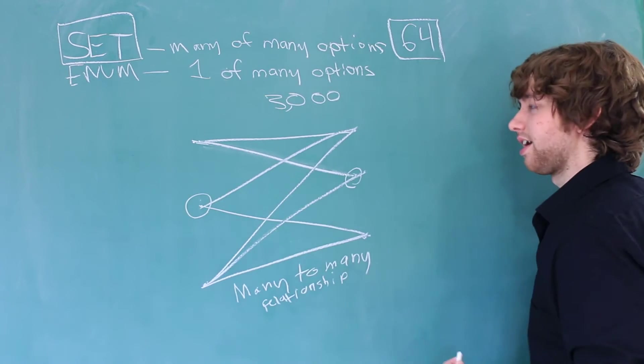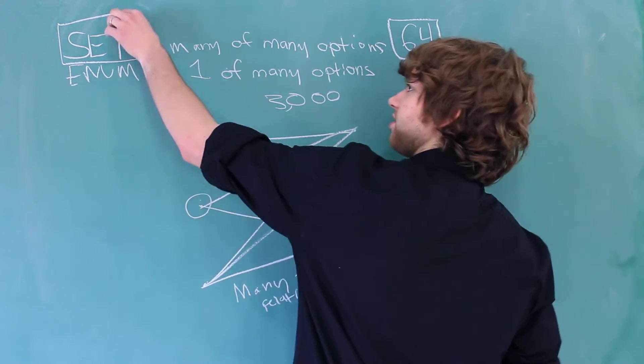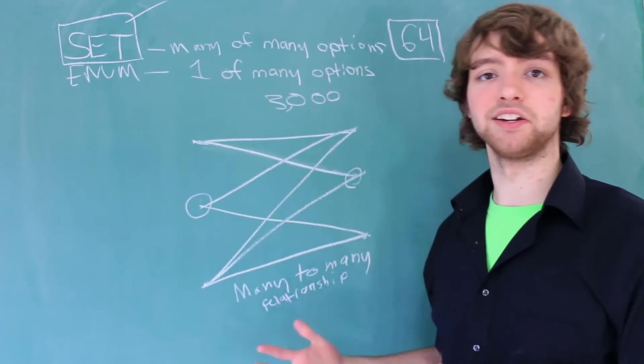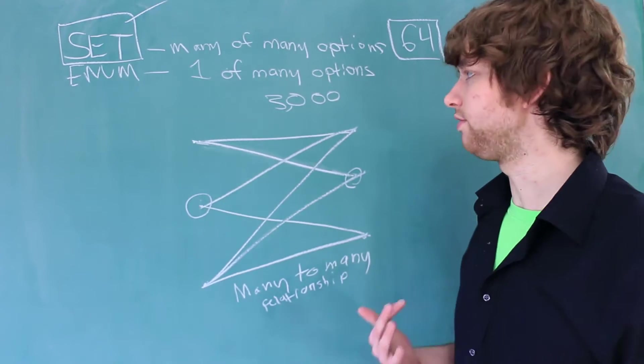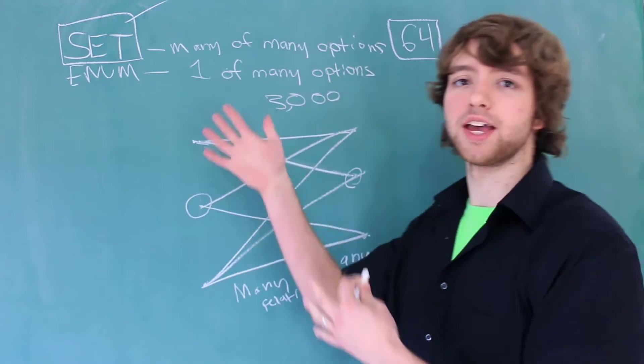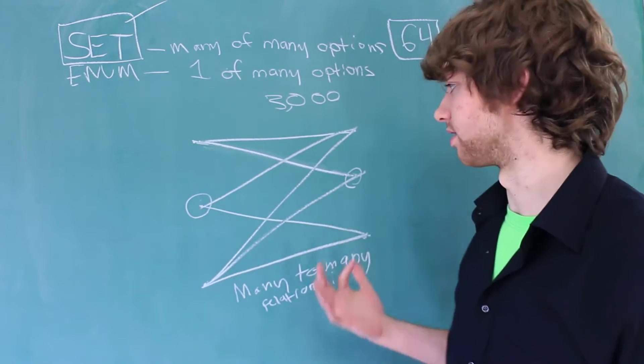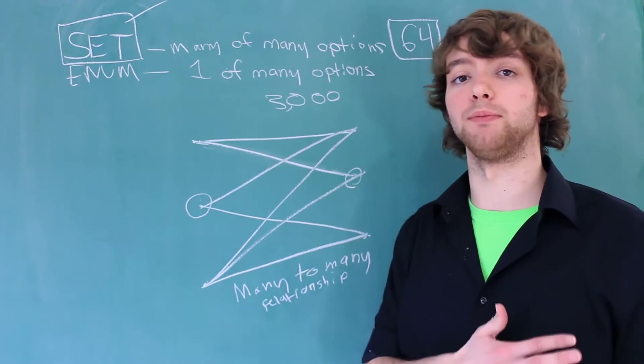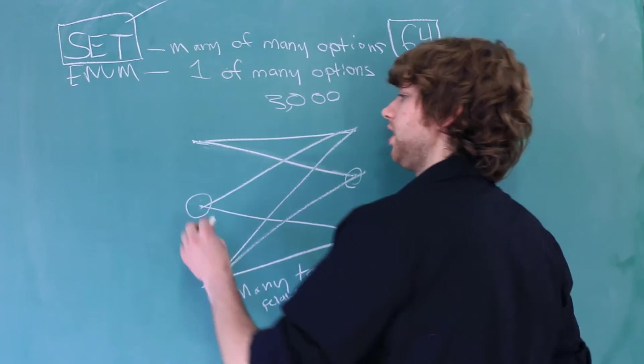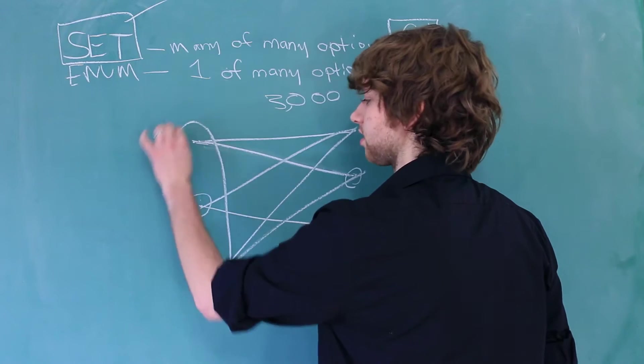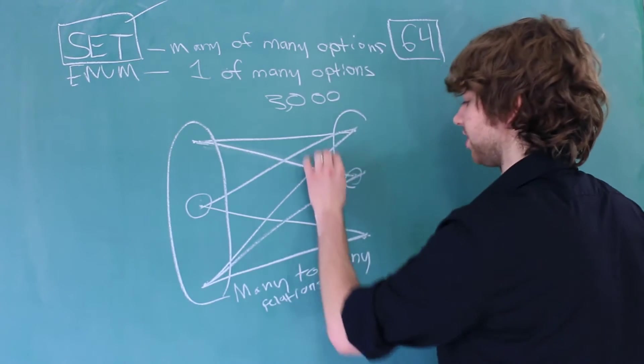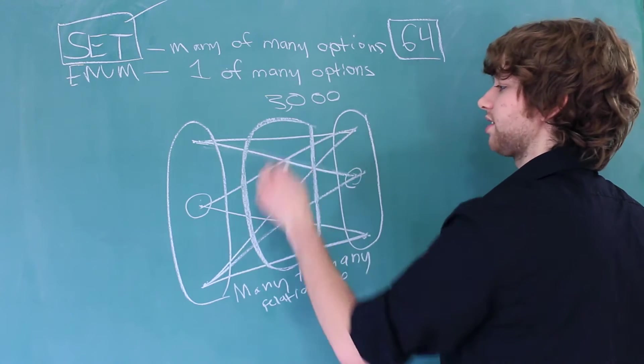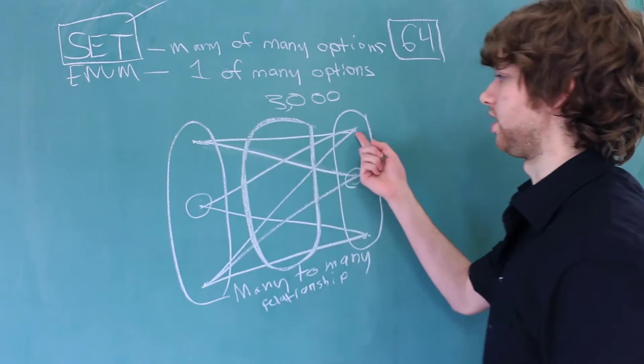In database design, it is well known that you should never use sets. Now the set data type is a little bit different because it's designed to work as a set. But even so, you can avoid the set data type by having proper database design. We've discussed how to design many-to-many relationships when we were talking about relationships. All you would need is a table for this, a table for these options, and then an intermediary table to list the associations from one of these rows to one of these.